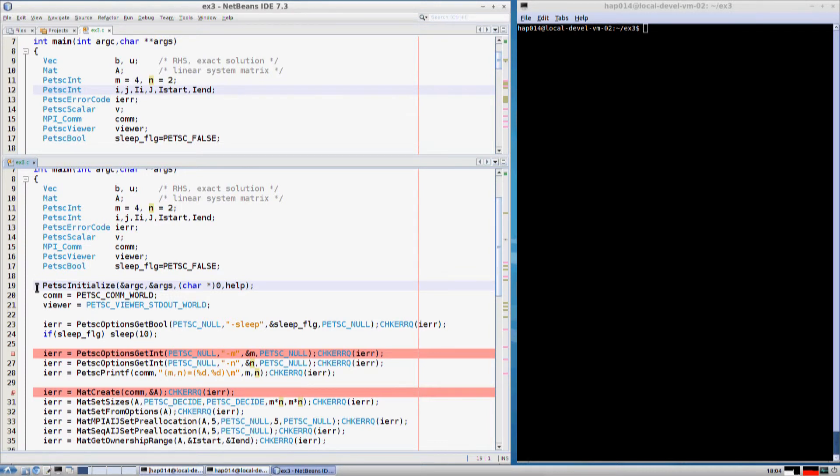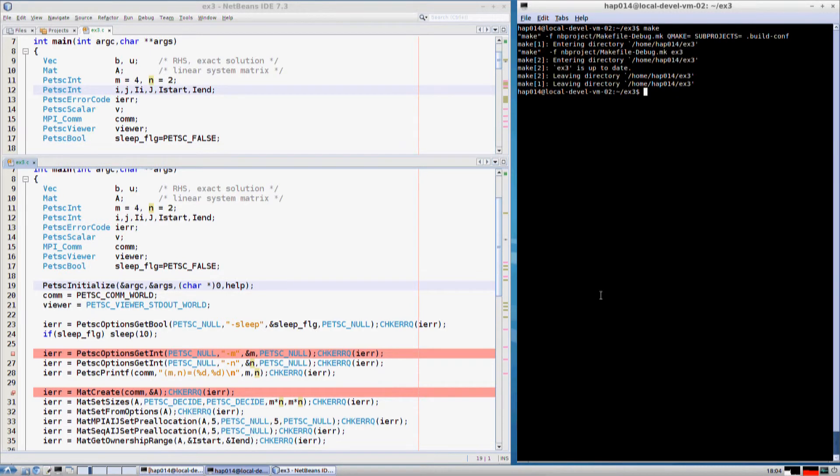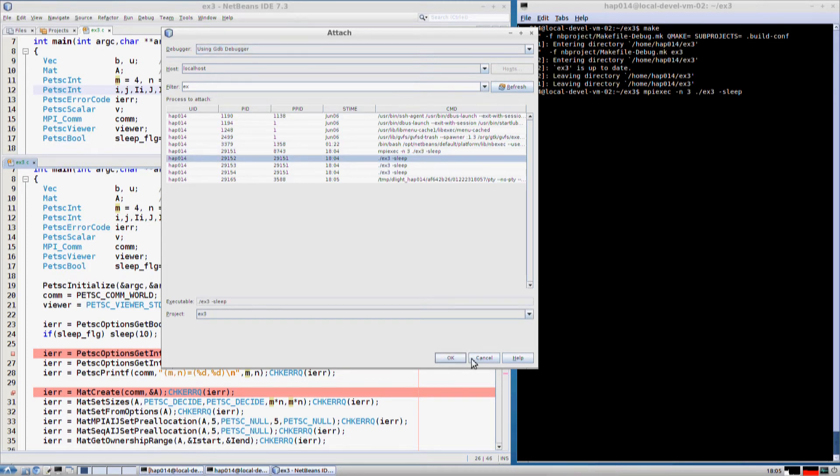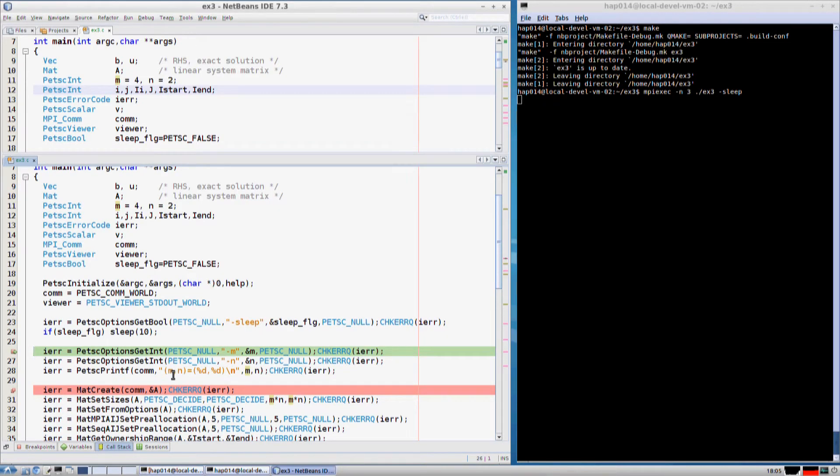In this example I will show you how to assemble a linear system coming from discretization of a simple 2D membrane problem. Again, I will compile and step through the source code. First of all, we must decide the dimensions of the problem. M and N mean number of mesh points in X direction and Y direction respectively. We will print them to the standard output. In this case we've got the default values 4 and 2.